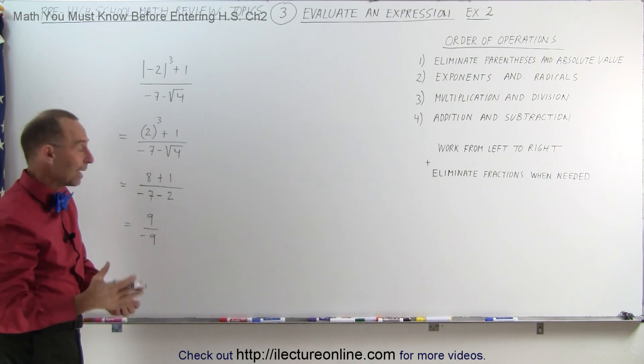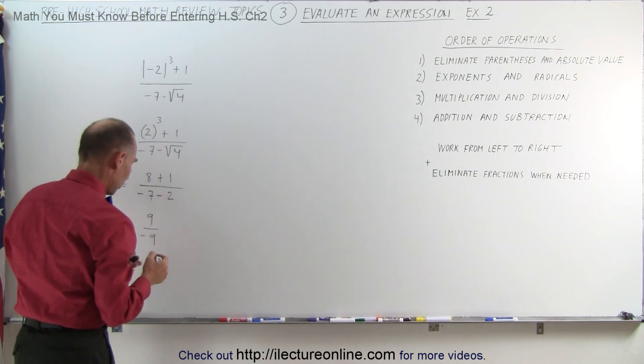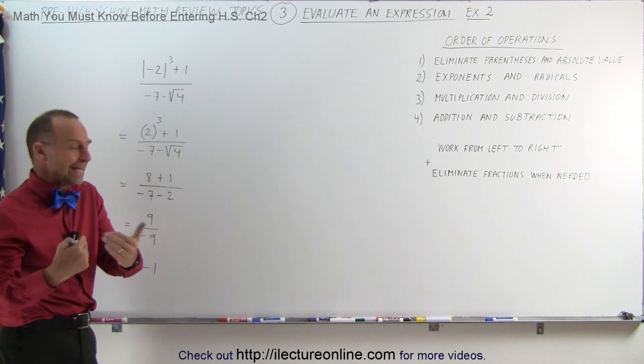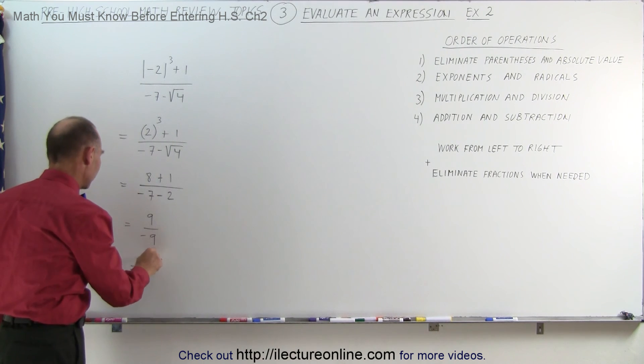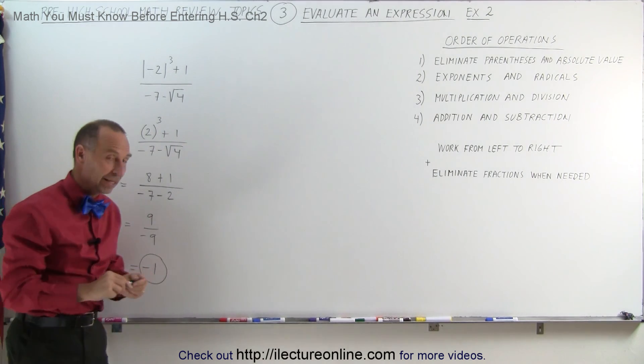Now we can divide 9 by minus 9, which is simply equal to minus 1. Remember, when you divide or multiply a positive and a negative number, you end up with a negative result. And this is the answer, negative 1 is what this is equal to. And that's how it's done.